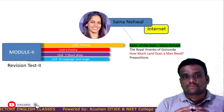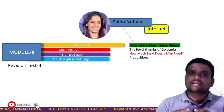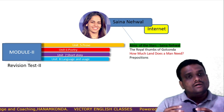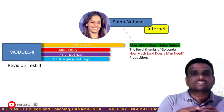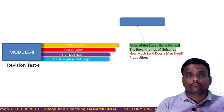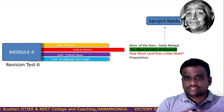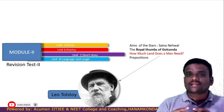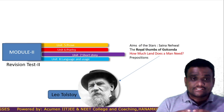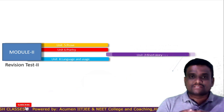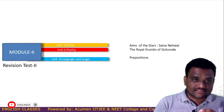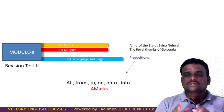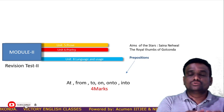Module two. The prose of module two aims at the star Sinanaval. Sinanaval is not the author of this particular lesson, but it is about Sinanaval. The source of this lesson is completely from the internet. The poetry of module two is 'The Royal Tombs of Golconda' by Sarojini Naidu. The short story is 'How Much Land Does a Man Need?' by Leo Tolstoy, but this unit has been taken out of the syllabus for this year. Language and usage of module two is prepositions, and four marks are compulsory through this unit.